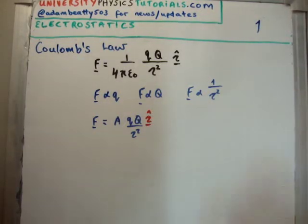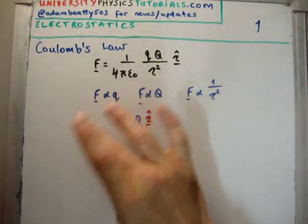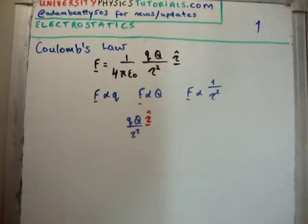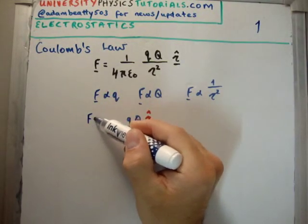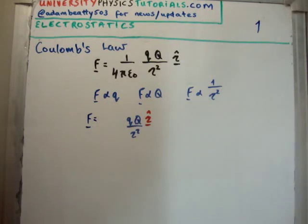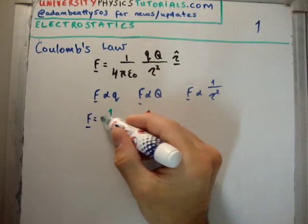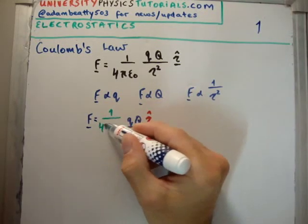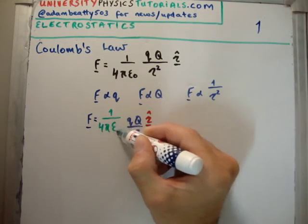Now what about the constants? I'd like for you not to worry about them, because their constants are largely as a result of the SI unit system. So if you go to another unit system, you might see different constants. So don't worry about them. But it's 1 over 4 multiplied by pi multiplied by epsilon 0.